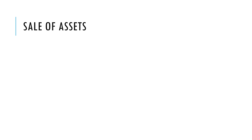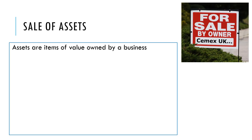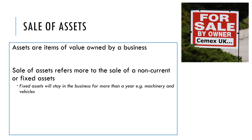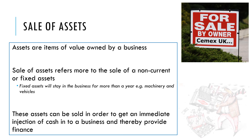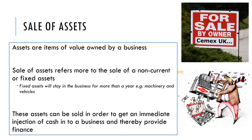The final internal source of finance is sale of assets, which involves selling items of value owned by the business. Normally we're talking about non-current or fixed assets — assets likely to stay in the business for a long period of time, such as machinery and vehicles. These assets can be sold in order to get an immediate injection of cash to provide finance for an alternative purpose. For example, if a business had an old factory they weren't using anymore, they might consider selling it. You probably wouldn't sell your main assets, but if you had a spare or underutilised one, selling it and using that finance elsewhere would be sensible.